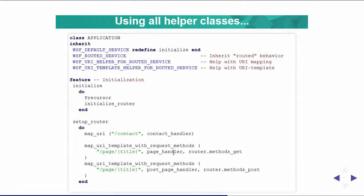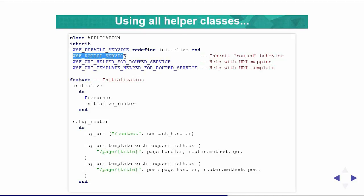The final code looks like this. It has a class application which inherits from default services, as always with the Eiffel Web Framework. You also inherit from WSF routed service to get the routed behavior. In the initialize procedure, don't forget to call initialize router. Then you simply implement setup router.